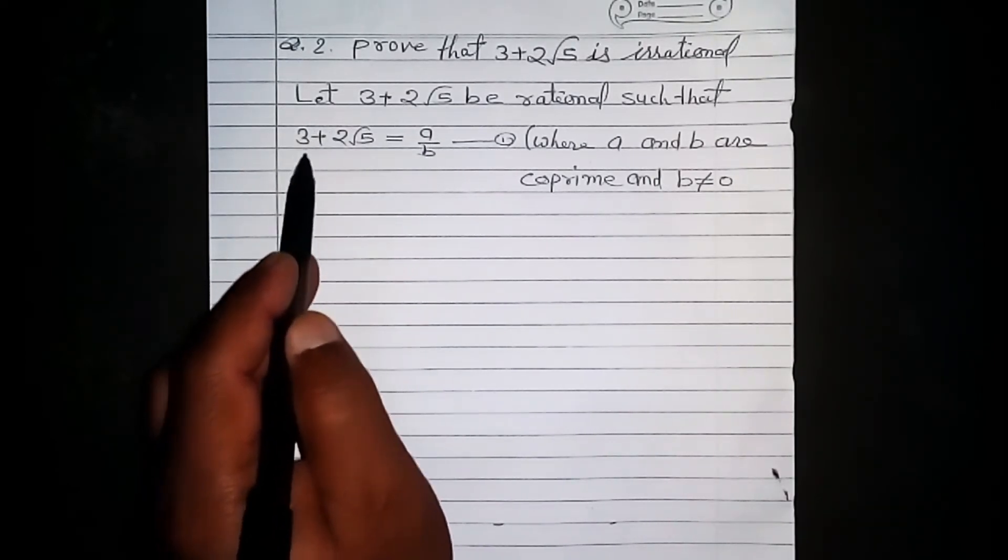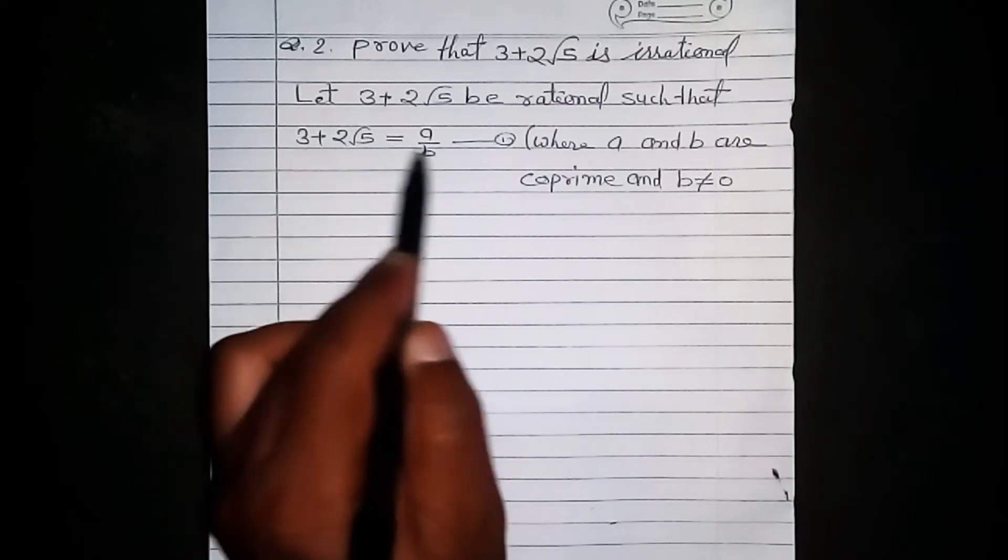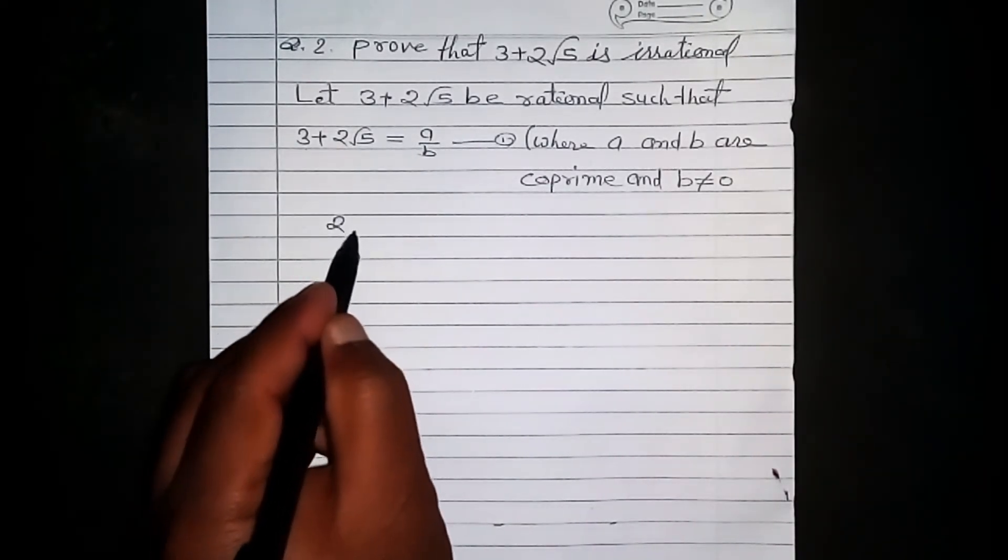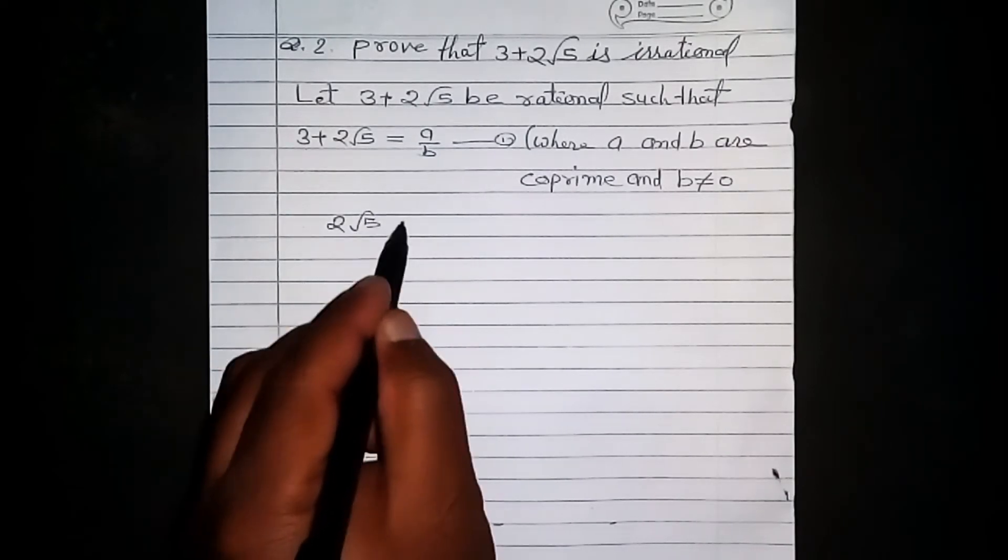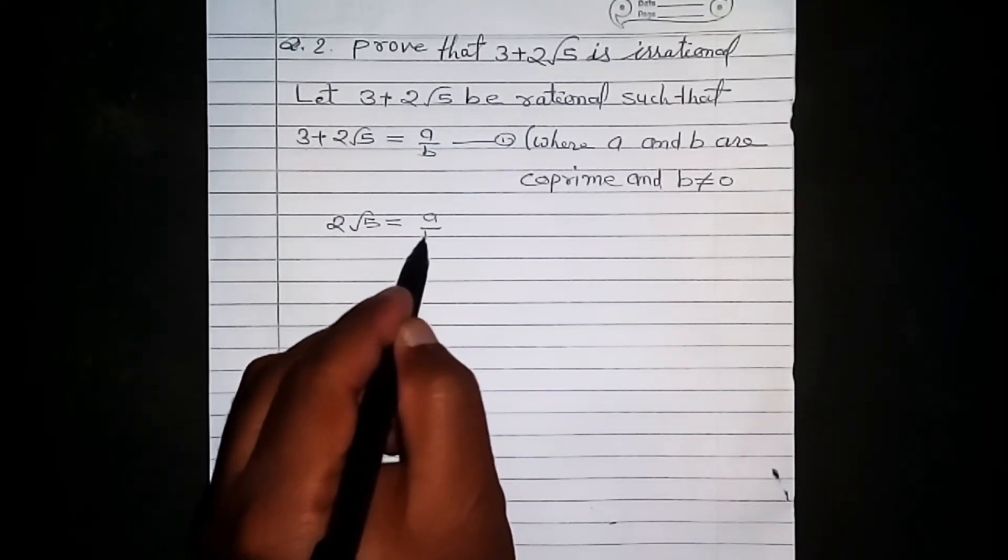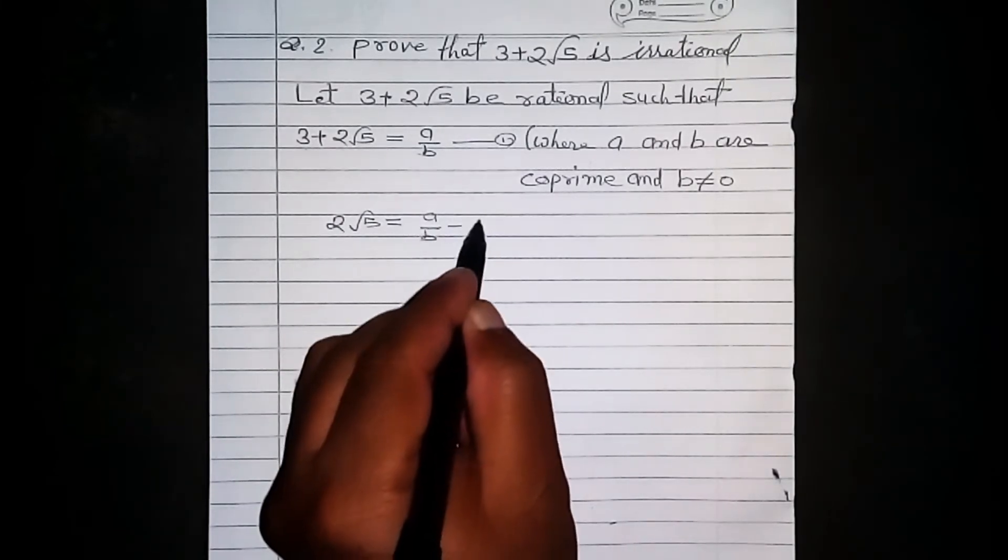Let us transpose 3 to the right hand side to get 2 root 5 is equal to a by b minus 3.